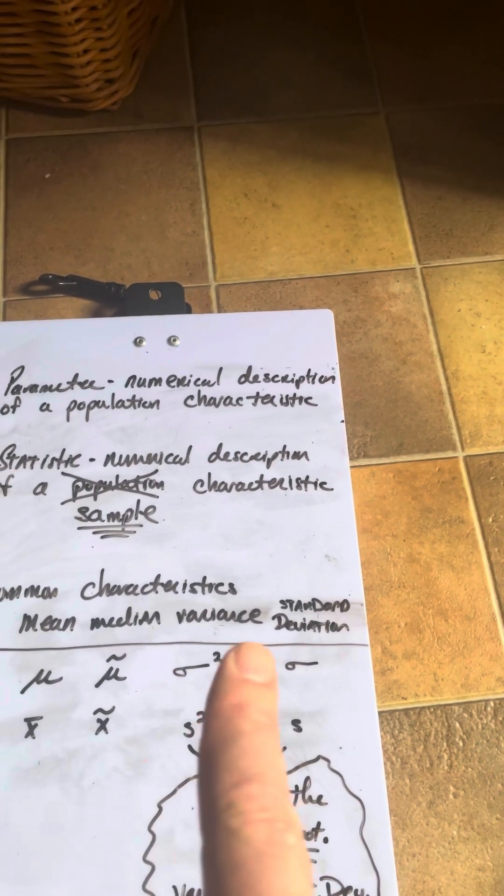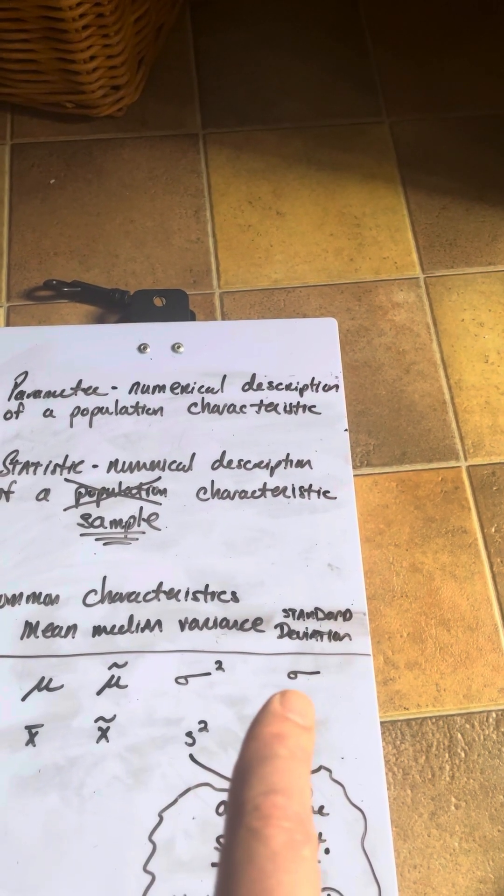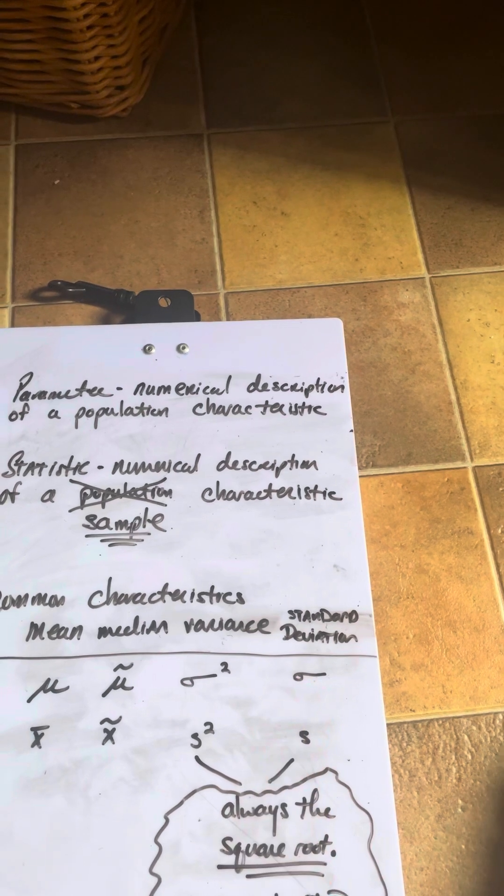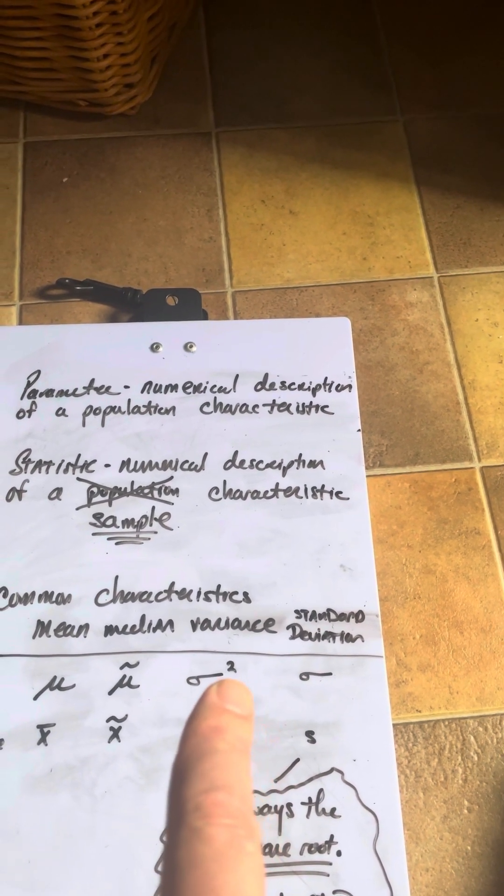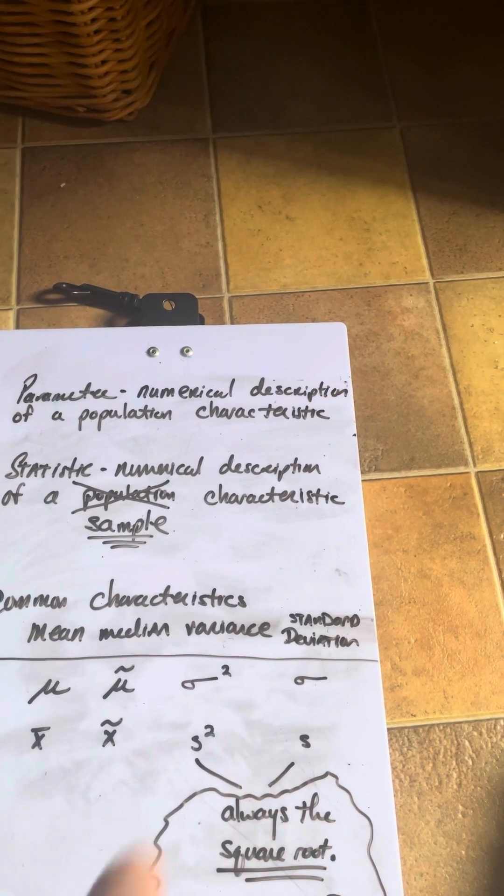Now, when we get over to variance, we have this Greek letter sigma. And for standard deviation, we have the Greek letter sigma. How do you tell the difference? Well, variance is squared.